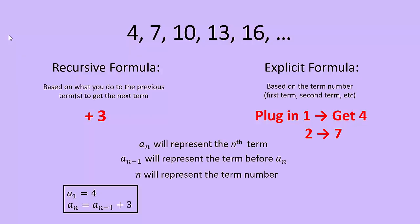That's the a sub n minus one plus 3. So it looks weird. The notation might be new to you. But the idea is simple. Add 3 to the term before it.